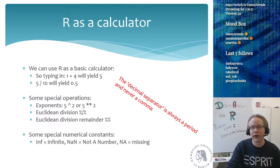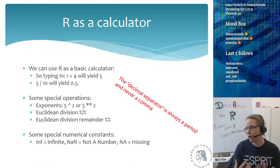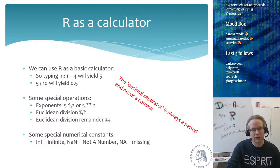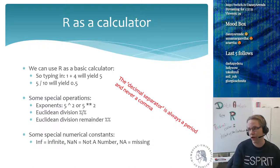The R interpreter understands basic mathematics. Remember that the decimal separator in R is always the period, never the comma — so it's 5.3 for five and three tenths, using the American system. There are special operators: for exponents you can do 5^2 or 5**2, which is 5 to the power of 2, giving 25. R also supports Euclidean division and the Euclidean division remainder, which come up a lot in computer science.